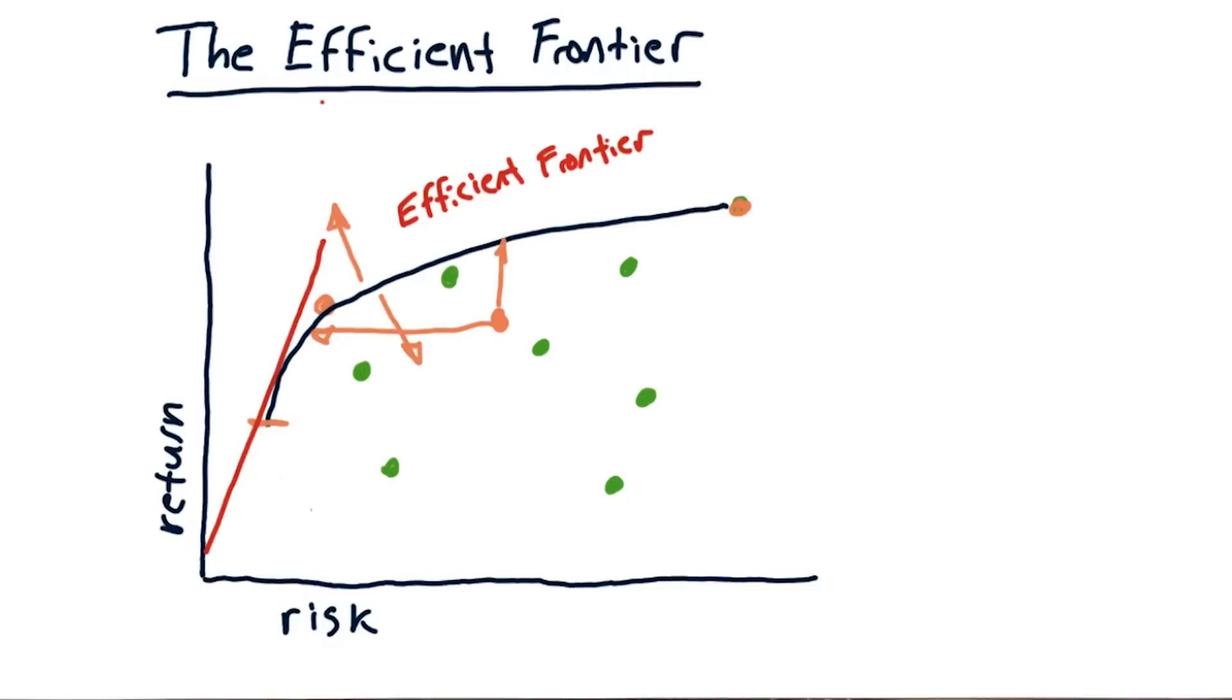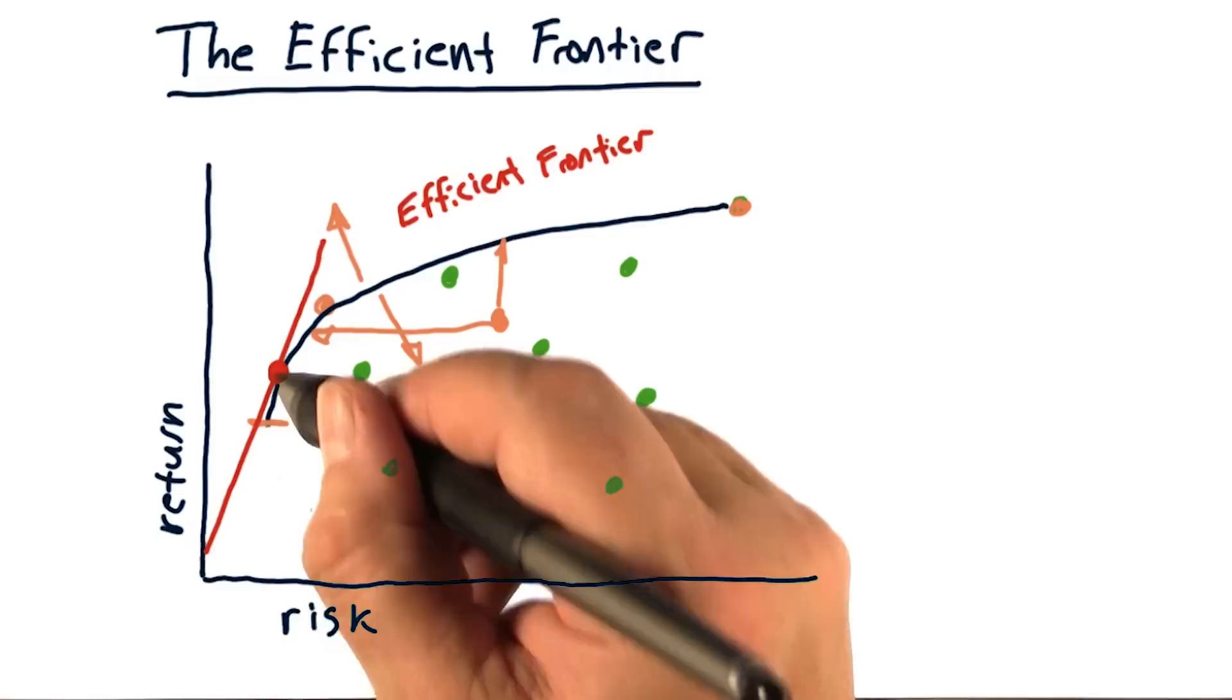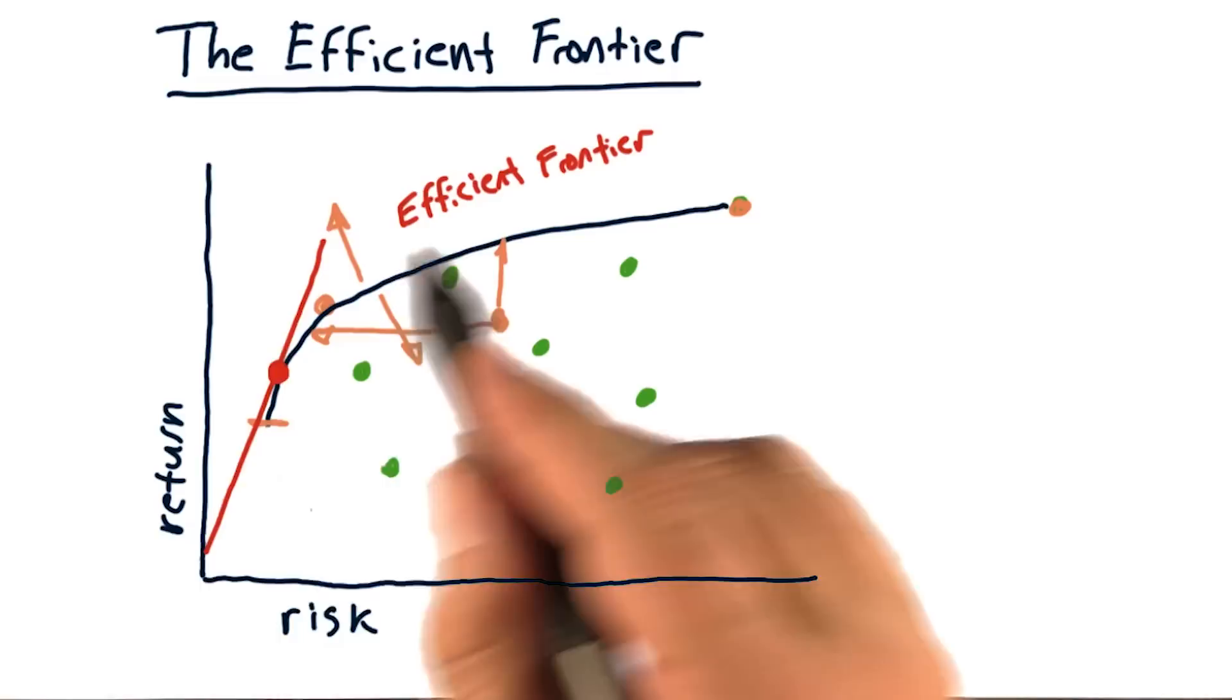if we were on the efficient frontier. One last thing to mention: if you draw a tangent line from the origin to the frontier, where it hits is the max Sharpe ratio portfolio for all of these assets.